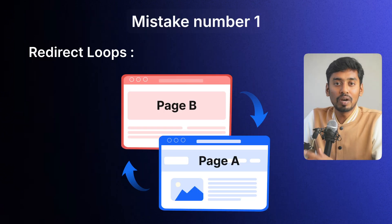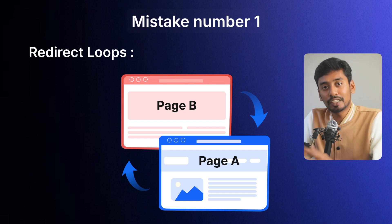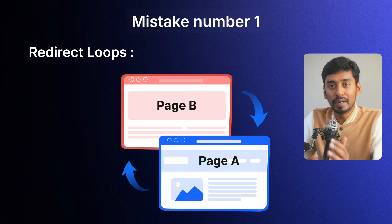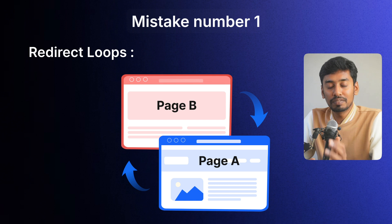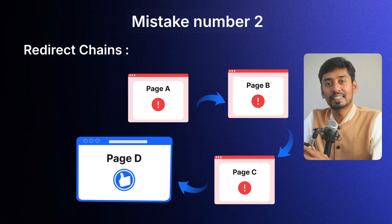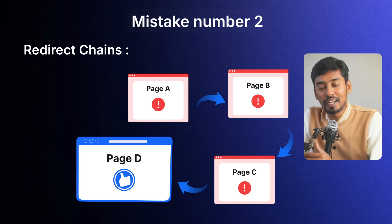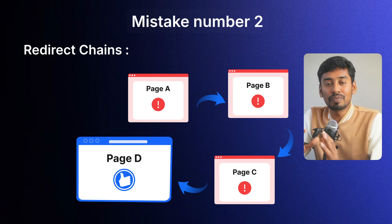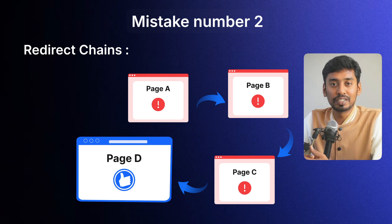Now let's talk about what not to do. Mistake number one is redirect loops. This happens when page A redirects to page B, but then page B redirects back to page A — infinite loop, not good. Mistake number two is redirect chains. This is when an old URL redirects to another old URL, then another, before finally reaching the right page. That slows things down. Always redirect directly to the final page.